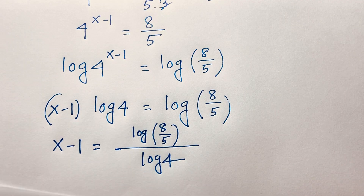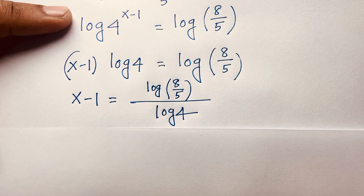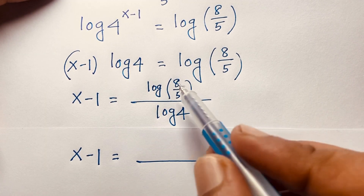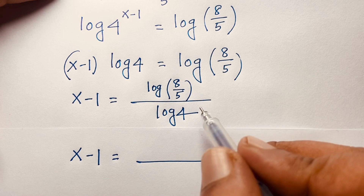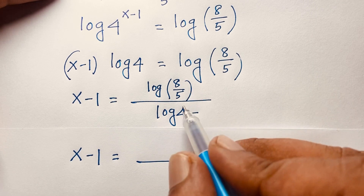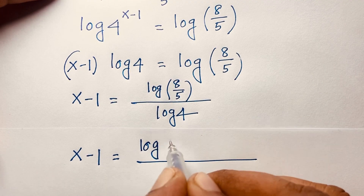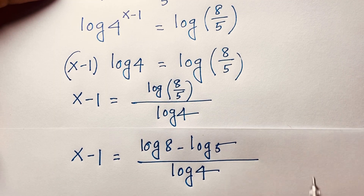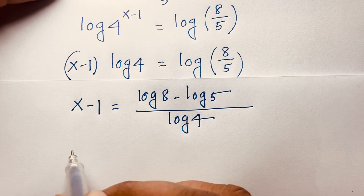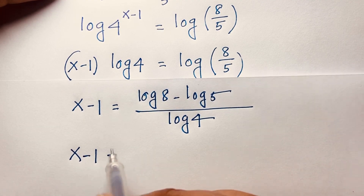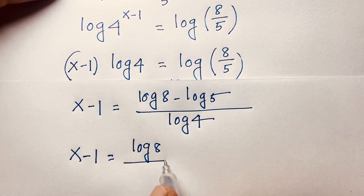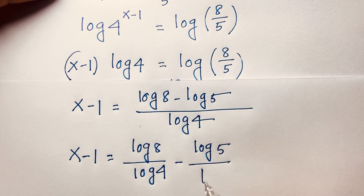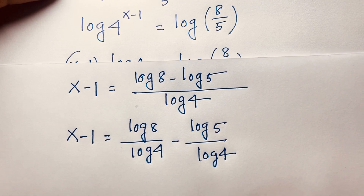Using the logarithm quotient rule — log a over b equals log a minus log b — we get x minus 1 equals log 8 minus log 5, all over log 4. Separating the fraction gives x minus 1 equals log 8 over log 4, minus log 5 over log 4.